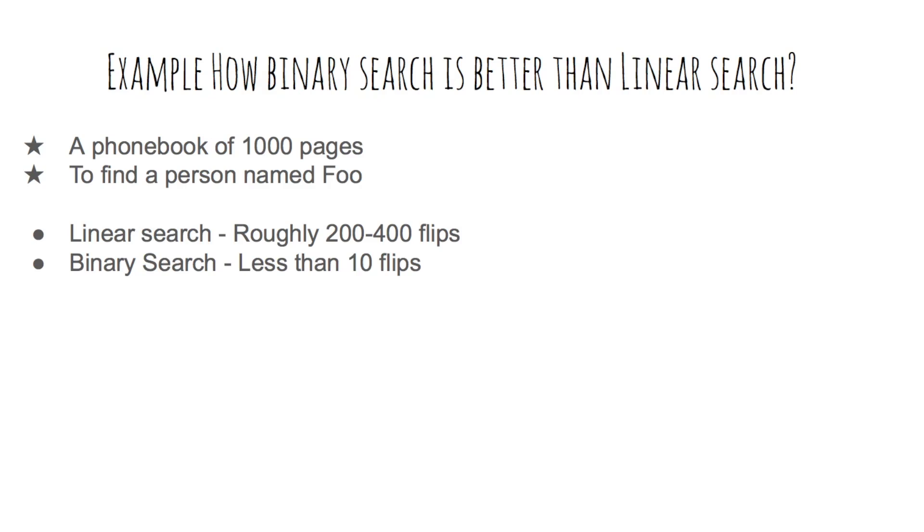In this example it is shown how binary search performs better than linear search. Assuming if we have a phone book of 1,000 pages and we were to use linear search for searching for a person named Foo, we are kind of flipping the pages one by one from A to F until we find it, probably after 200 to 400 flips of the page. Now let us see if we used a binary search. We will go straight to the middle of the book, the 500th page, and throw away the second half. If we continue this process, we will take less than 10 flips.